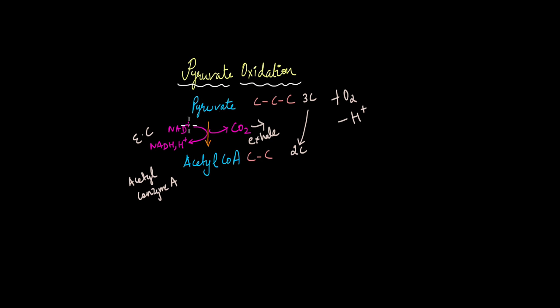Now one more thing that you should remember is that this step takes place in the matrix of the mitochondria. Glycolysis takes place in the cytoplasm. From there, pyruvate enters the mitochondrial matrix where pyruvate oxidation takes place and then subsequently Krebs cycle takes place.